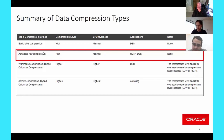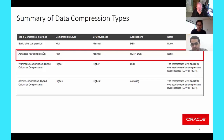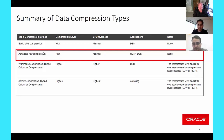Do I need to change my application to use compression? There are no application changes required, whether you're using commercial off-the-shelf software, custom-designed, custom-built, or homegrown applications. There's no change to your application in order to use our compression, and that's true for basic compression, advanced row compression, and even hybrid columnar row compression.